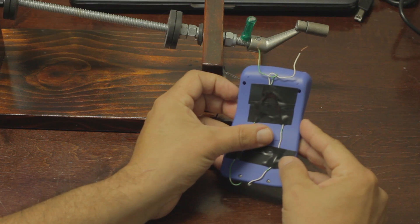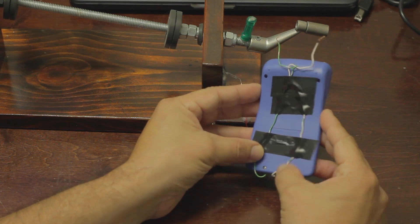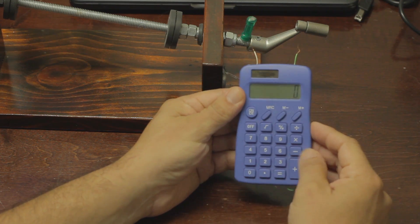I have two leads coming out of the calculator which are attached to the equal button and then connect to a reed switch.